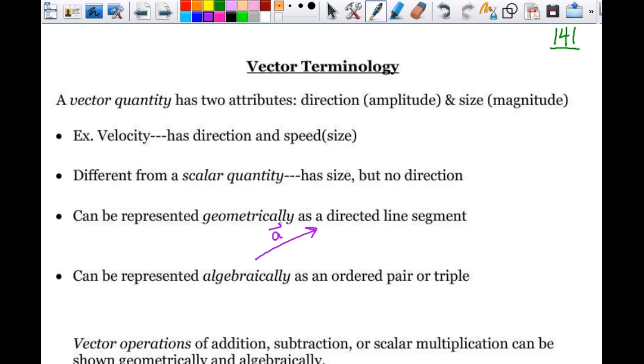Or it can be represented algebraically as an ordered pair or triple. So vector A, we could say is at three, two. As a triple, that's when we're getting into three dimensions. We are not going to look at three-dimensional vectors in here.